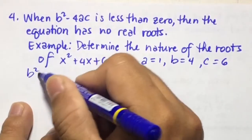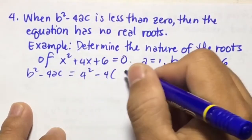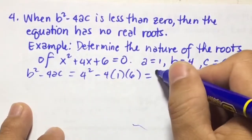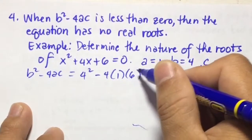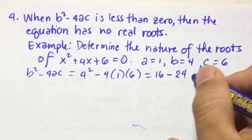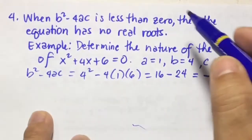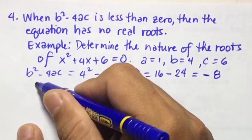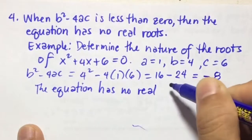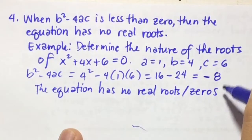Using the discriminant b squared minus 4ac, we have 4 squared minus 4 times 1 times 6. 4 squared is 16, and 4 times 1 times 6 is 24. So 16 minus 24 equals negative 8. Since this is negative, meaning less than 0, the equation has no real roots or zeros. This means the zeros are imaginary numbers.